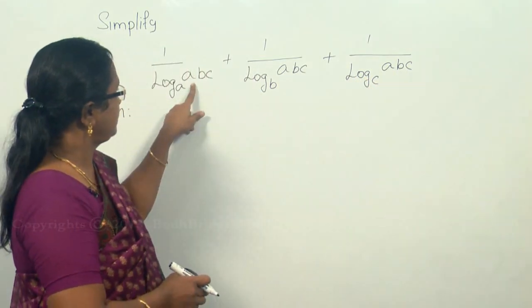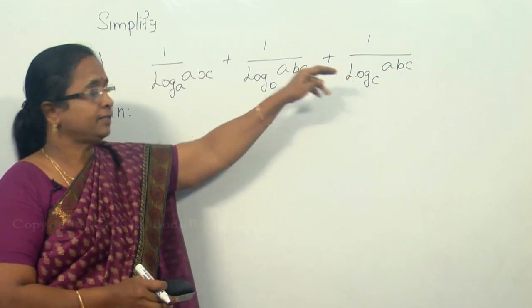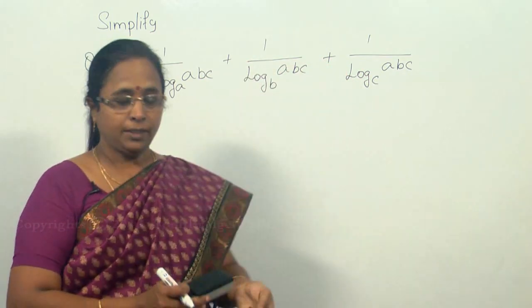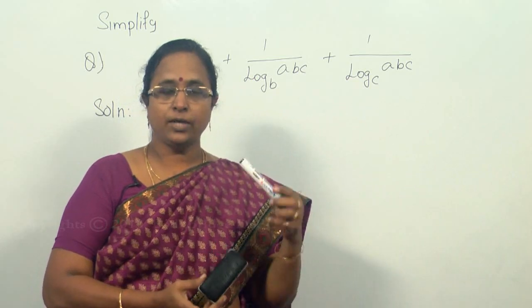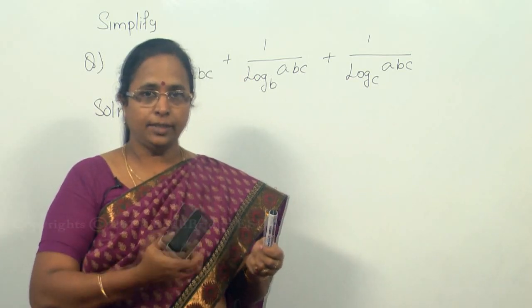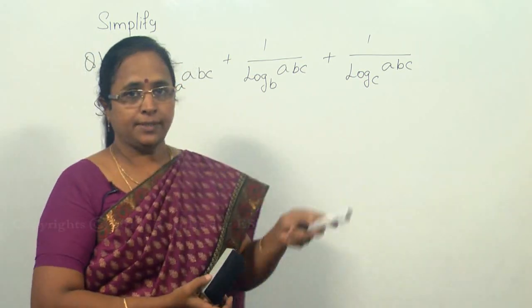Here the one thing which you can see is abc is common everywhere but the base is different. The rules which are applicable—you can make use of log m n or log m by n, separating as log m plus n or log m minus n—is possible only when the base is same.